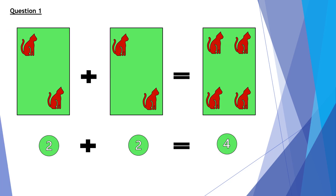Question 1. 2 cats plus 2 cats equals 4 cats. So in the number form, 2 plus 2 equals 4.